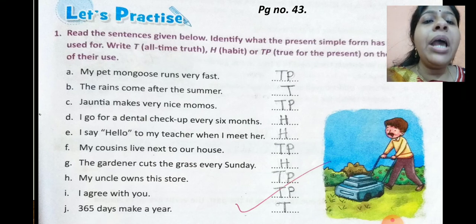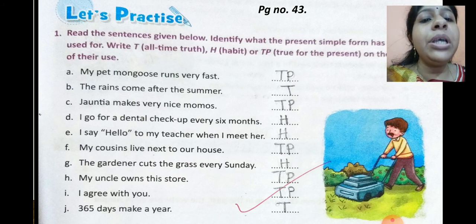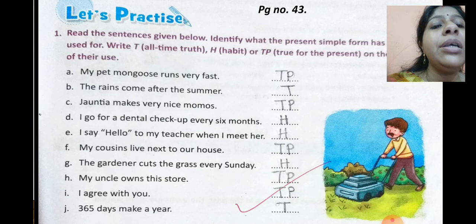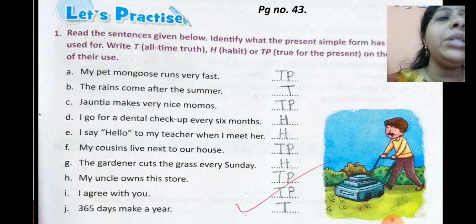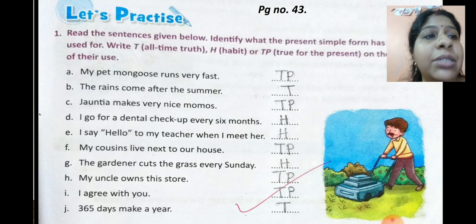Number I: 'I agree with you.' Write TP. Number J: '365 days make a year.' That is all-time truth — write T.